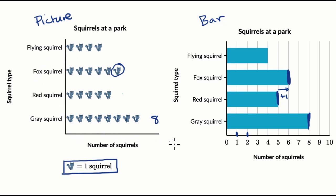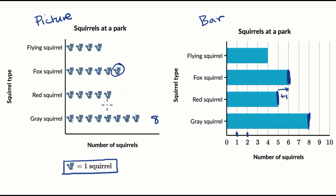Now, it's also important to realize what these graphs are not going to tell you. This isn't necessarily going to tell you the color of the squirrels. You might look at the picture graph and think the squirrel is this gray-blue color, but you can't just assume how it's drawn is what it actually is — it's just a symbol. For example, a red squirrel is probably more reddish and a gray squirrel more grayish, but the graph doesn't tell you what they look like. It doesn't tell you how hard it was to collect the data, how long it took, anything about the squirrels' behavior or what they might eat. You just know how many of each type of squirrel was found at the park.